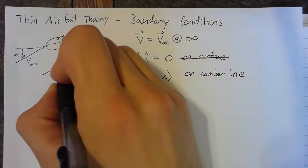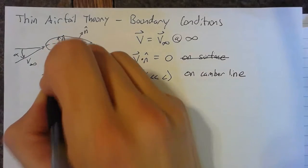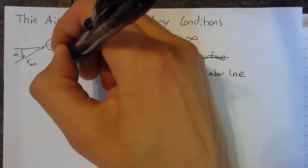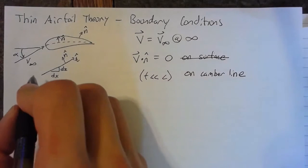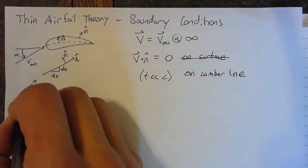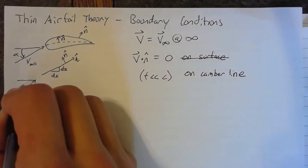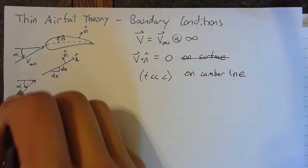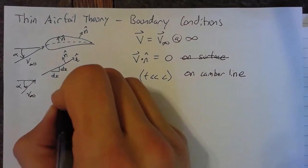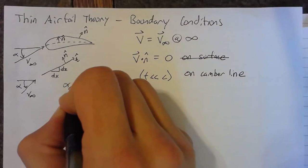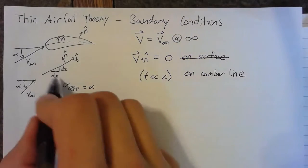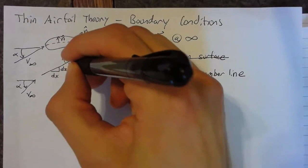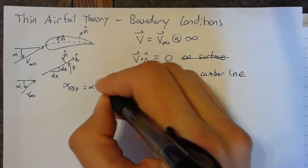So, this camber line is defined by some slope, dz by dx, and again, we have some normal direction and we have some tangential direction. If we have some inflow, this V infinity, which has some angle of attack, then we can define an effective angle of attack, which is to say the difference between our alpha and this slope, which we're going to call theta, alpha minus theta.